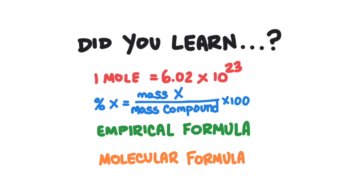So did you learn everything in this lesson? If you did, you learned that moles are the unit of chemistry and a mole is 6.02 times 10 to the 23. Percent composition compares the mass of an element to the mass of the entire compound. The empirical formula is the simplest whole number ratio of elements in a compound. The molecular formula shows the actual number of elements in a chemical compound.